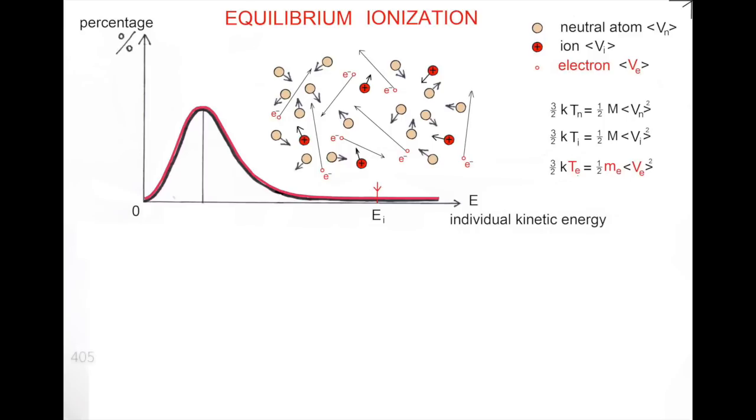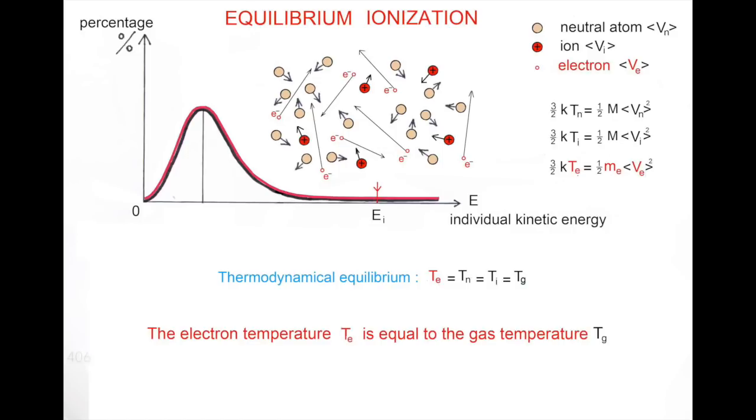In other terms, due to the definition of the absolute temperature, the three temperatures of the three species neutral ions electrons are equal. The electron temperature Te is equal to the gas temperature Tg. The electric field brings the energy, which is transmitted from the electron gas to the gas of molecules and atoms by collisions.